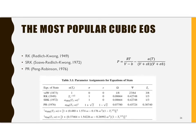Now, our most popular cubic equations of state are the Redlich-Kwong, 1949, and then in the 70s, we have both the Soave Redlich-Kwong and the Peng-Robinson. There's still continuing work in this area, but these are the ones that are probably most frequently used, especially by industry.